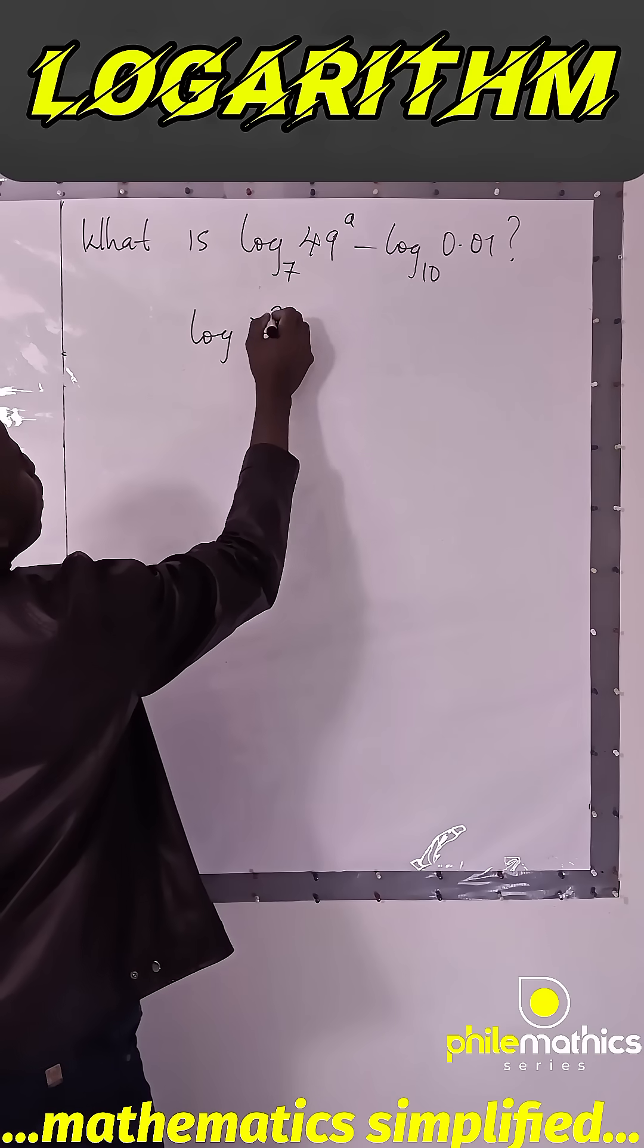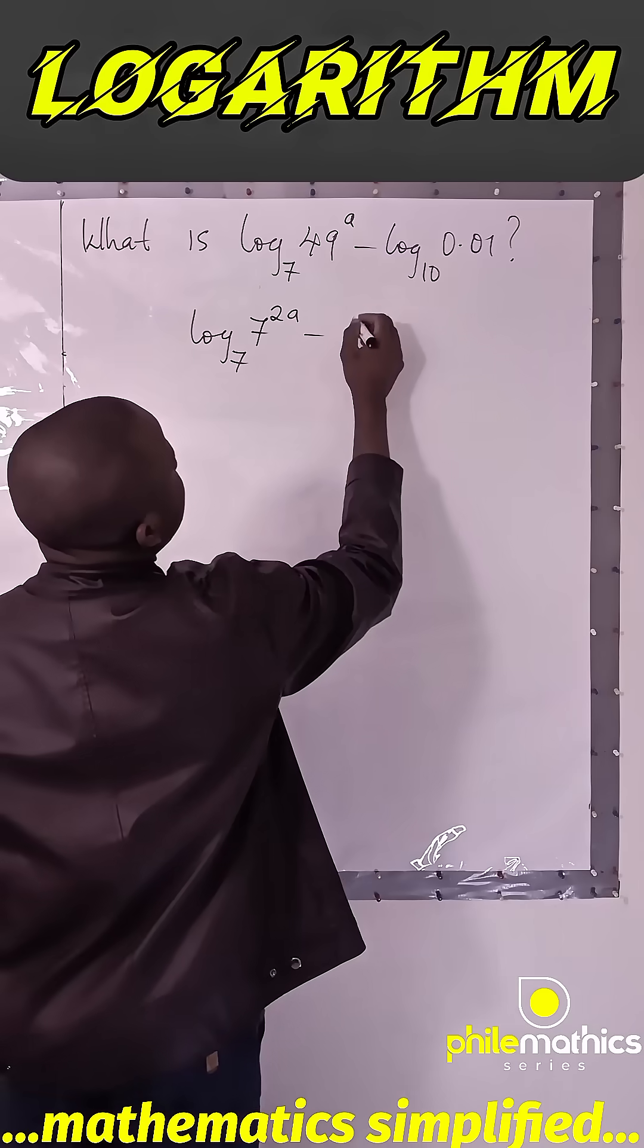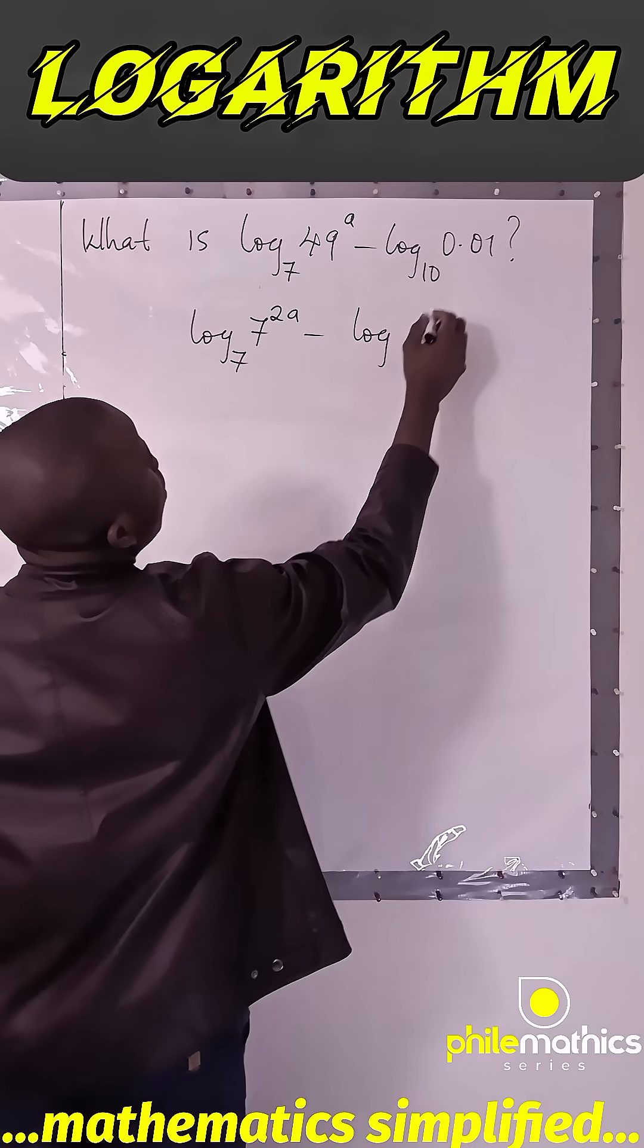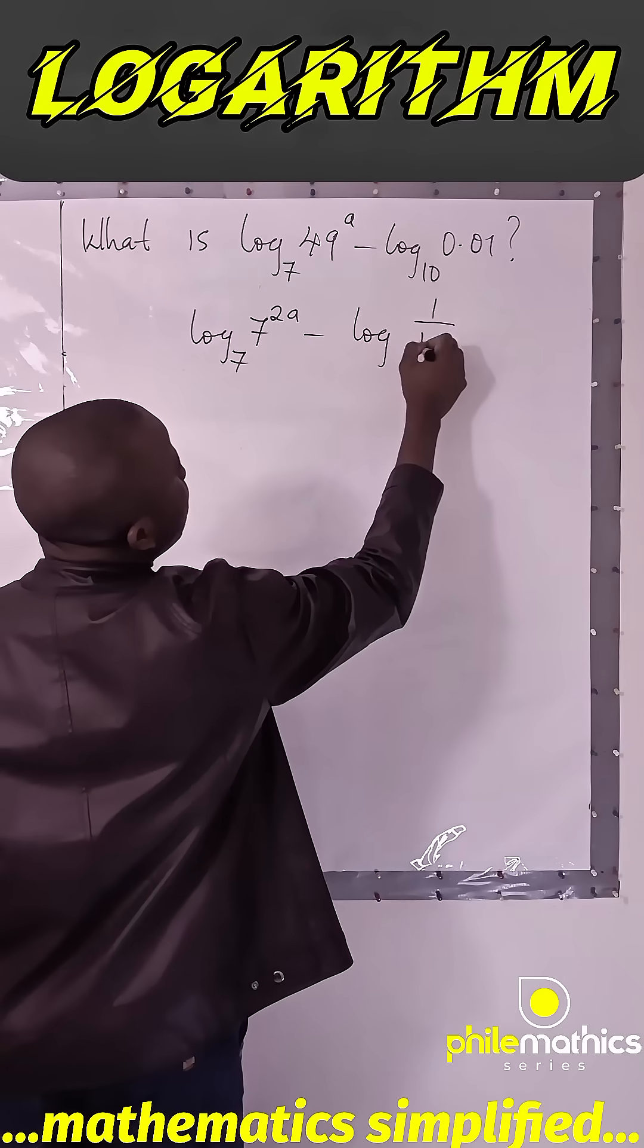This 0.01 can be written as 1 over 100, which can be written as 10 to power minus 2.